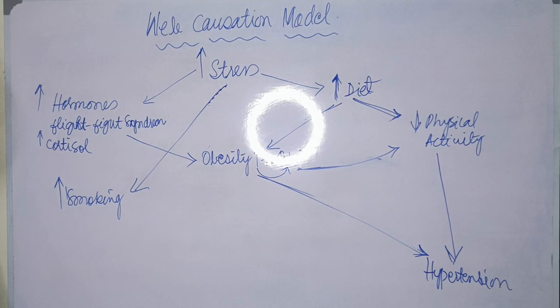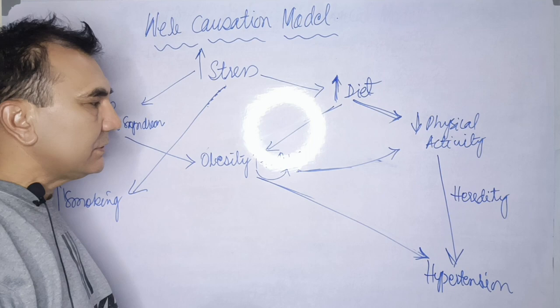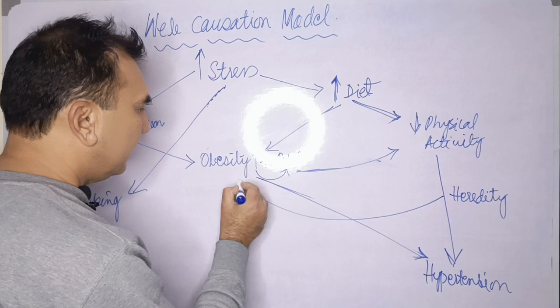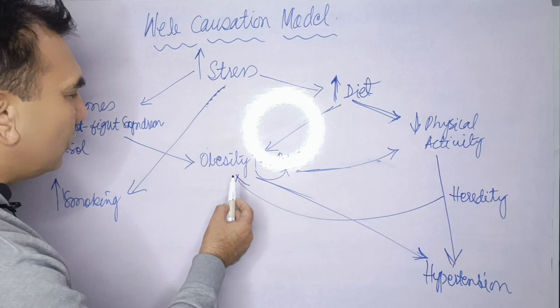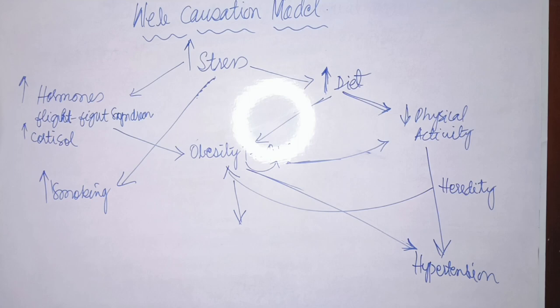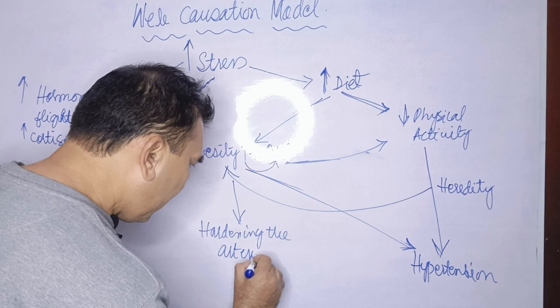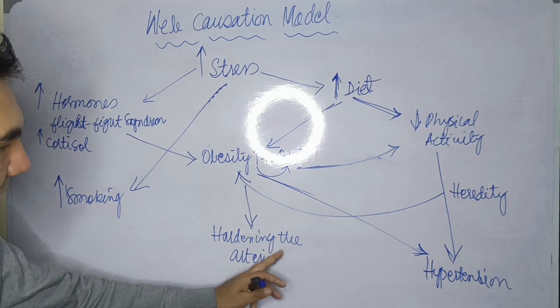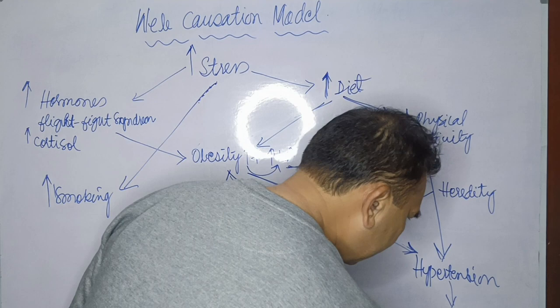Another predisposing factor is heredity — family history plays a role. Heredity increases obesity, as obesity tends to run in some families. Due to the increase in obesity and elevated lipid profile in the host's blood plasma level, it leads to hardening of the arteries — atherosclerosis — and this in turn leads towards hypertension disease.